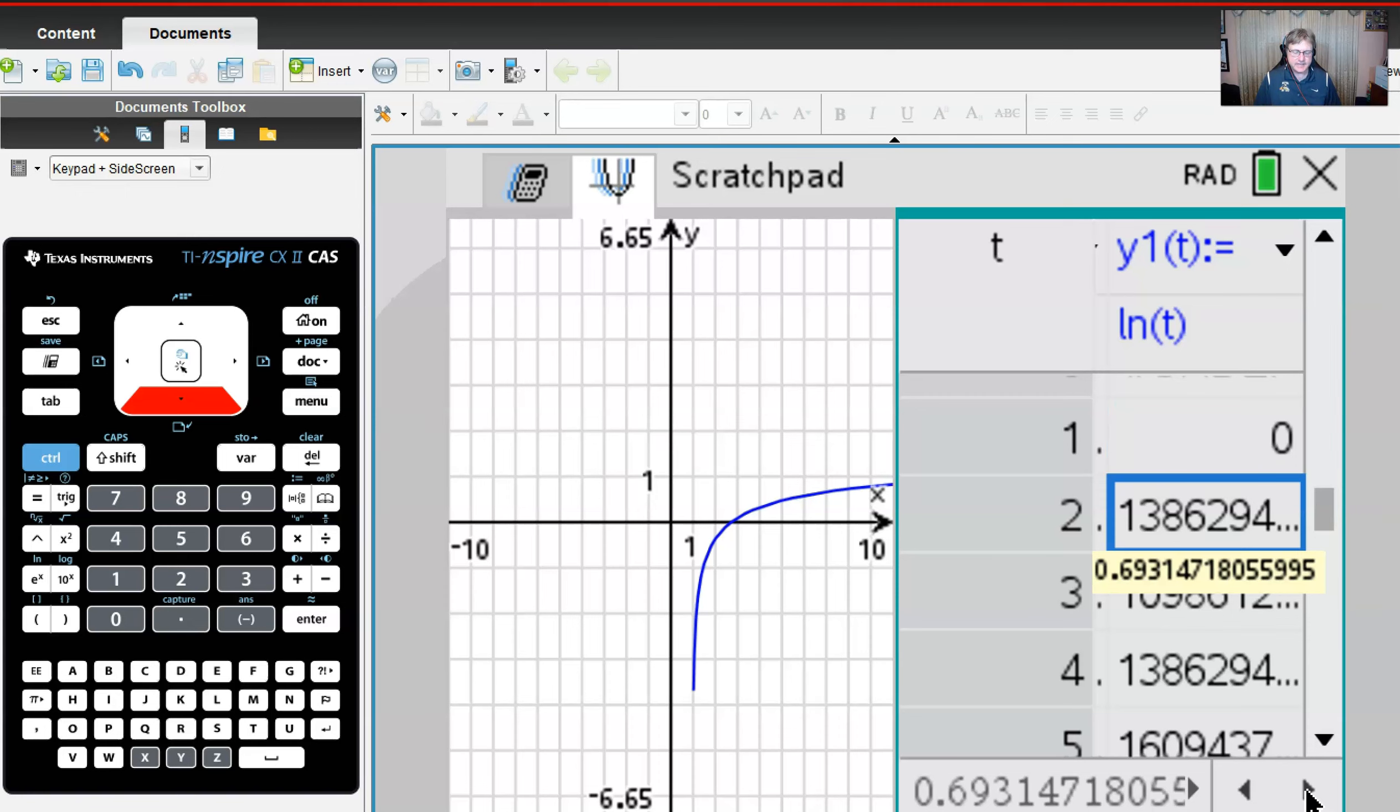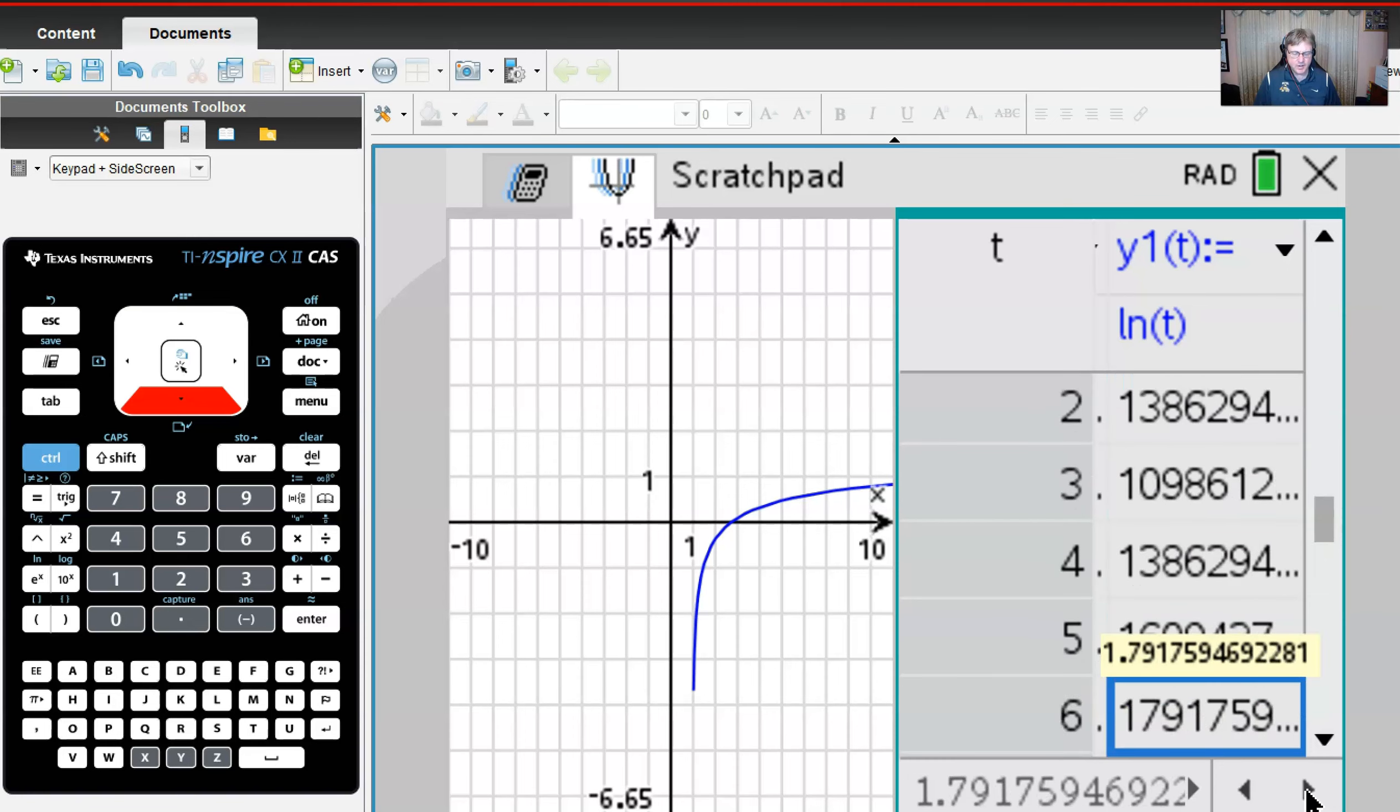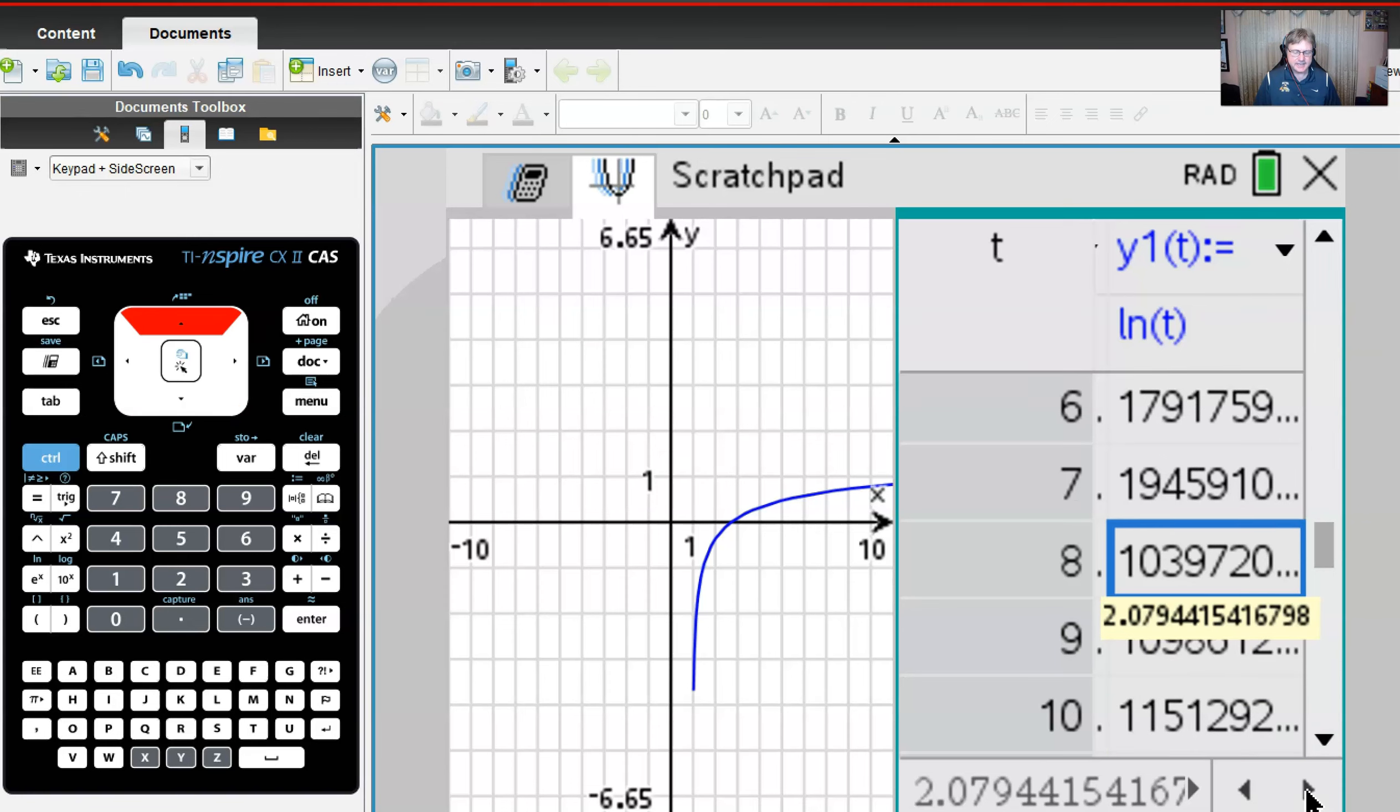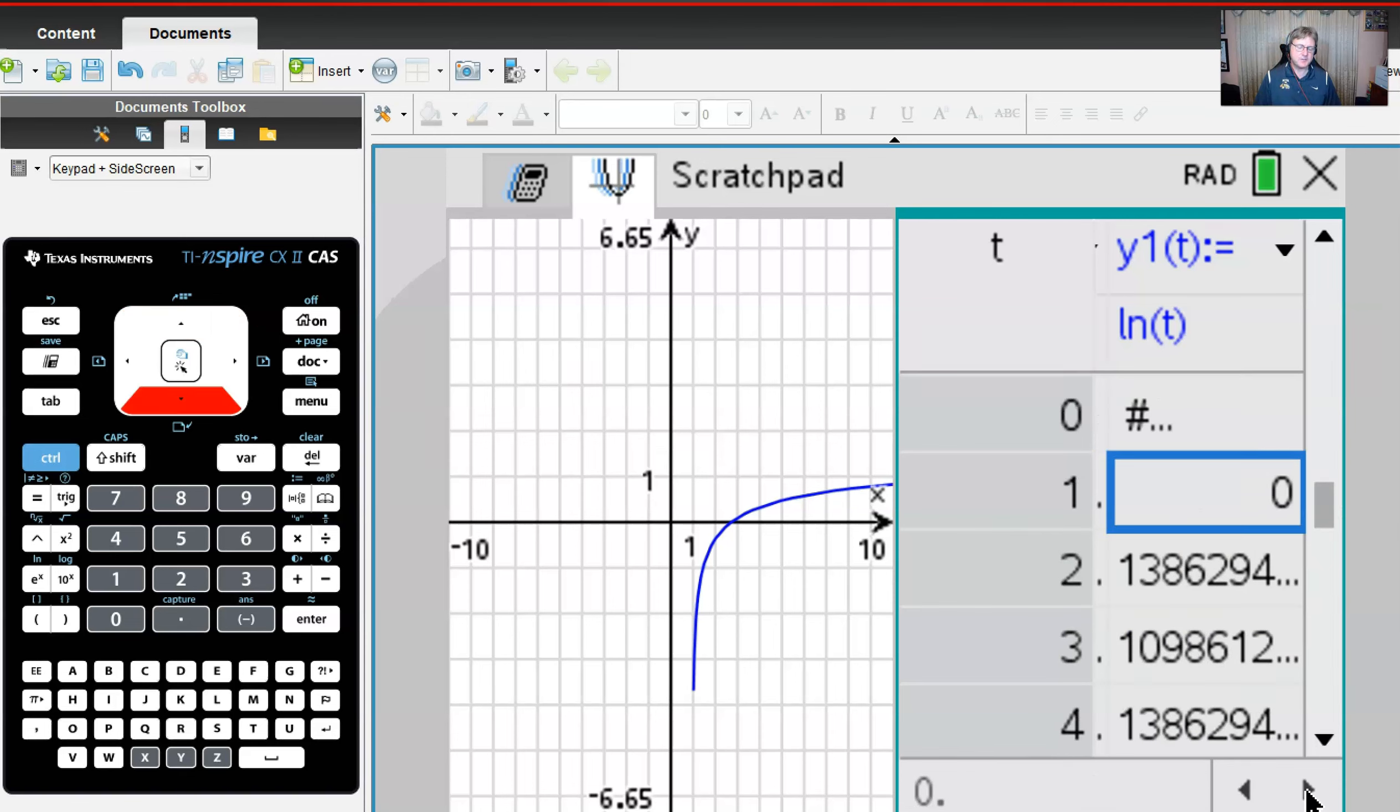What we'll notice is as the t value gets smaller, my y value is getting smaller. The problem is we never really got a chance to see what was happening between 1 and 2, but I have a pretty sneaky suspicion that we are just going to be getting smaller and smaller even between 0 and 1.